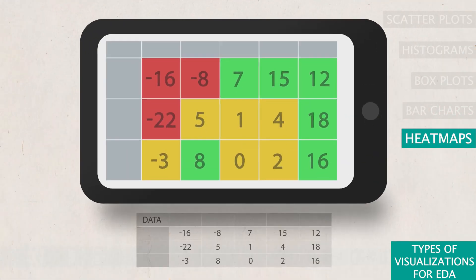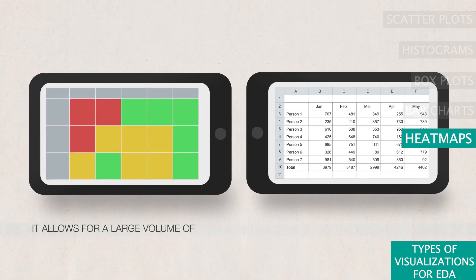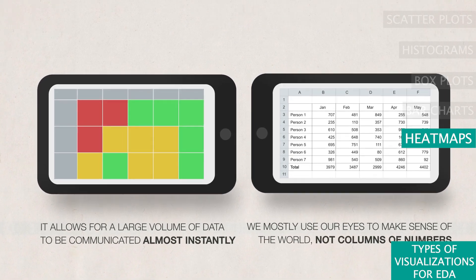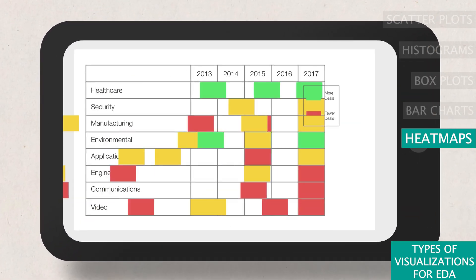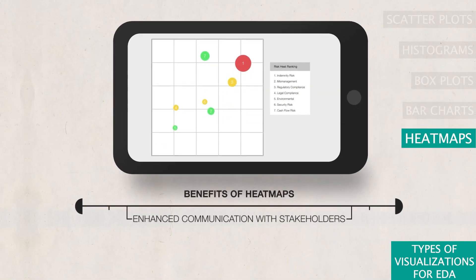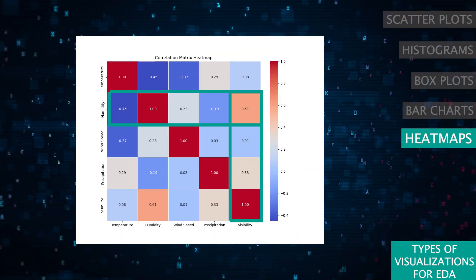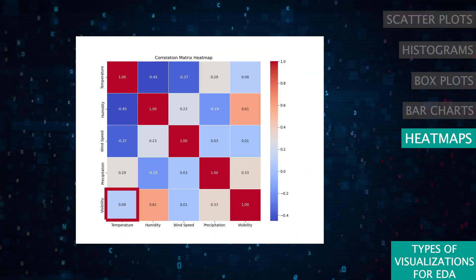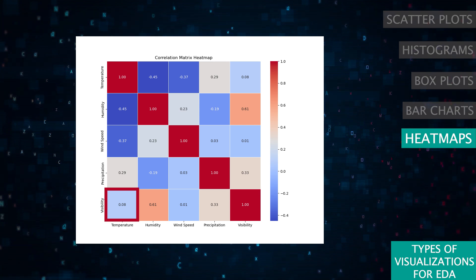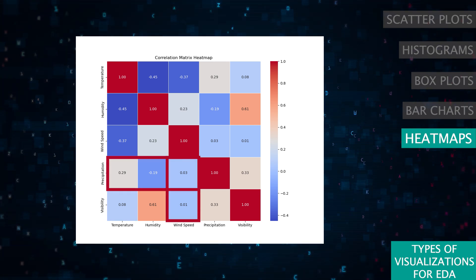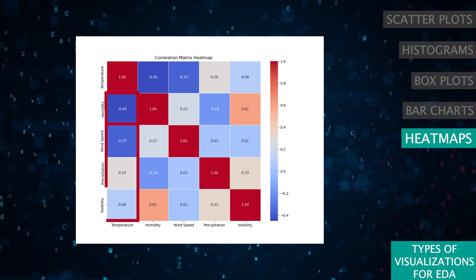Heat maps are excellent for visualizing data in matrix form. They're especially useful for displaying correlations between variables in a data set. The color intensity helps you quickly spot strong relationships. In this example, visibility and humidity are strongly correlated. On the other hand, there's no correlation between temperature visibility, wind speed precipitation, and wind speed visibility variables. In addition, you can see there's also some negative correlation, for example, between humidity and temperature.